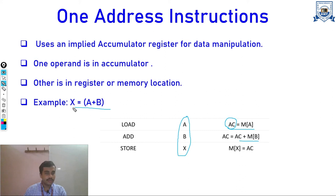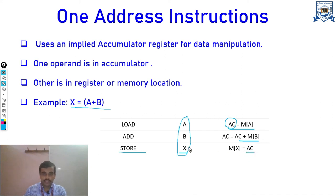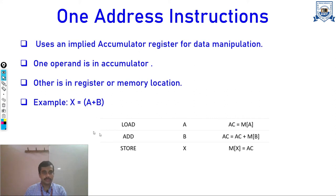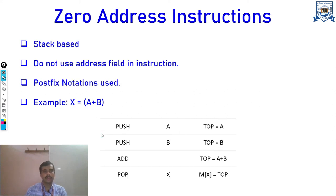We only need to store one address per instruction — the other operand is implicitly known to be in the accumulator. So: LOAD A, ADD B, and then STORE X. The STORE instruction moves the value from the accumulator to memory location X. Because only one address is stored per instruction, it is called a one-address instruction.